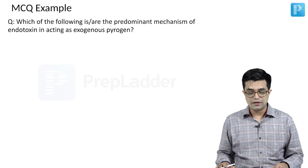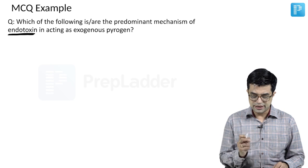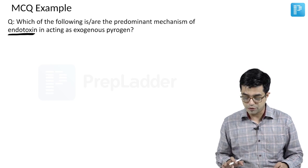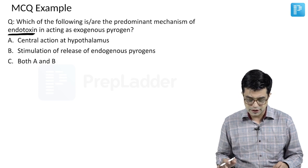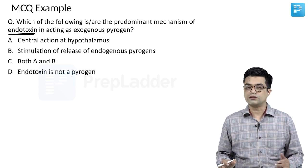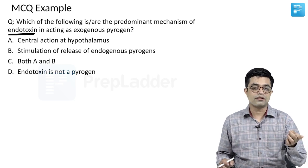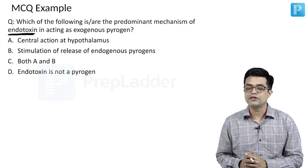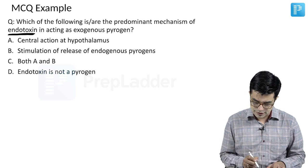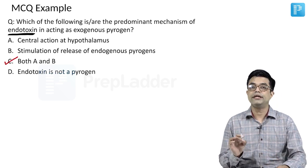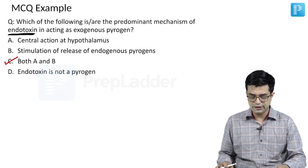Which of the following is or are the predominant mechanism of endotoxin, that is lipopolysaccharide, in acting as exogenous pyrogen. So, the options were central action at hypothalamus, stimulation of release of endogenous pyrogens, both A and B, and endotoxin is not a pyrogen. So, D option is incorrect and we know that it directly causes thermostat change as well as causes release of endogenous pyrogens like your inflammatory mediators and cytokines. So, the answer to this question is C, that is both A and B. It was a single choice answer. So, your best answer there was C, that is both A and B.